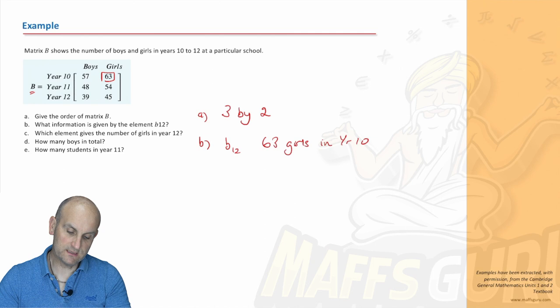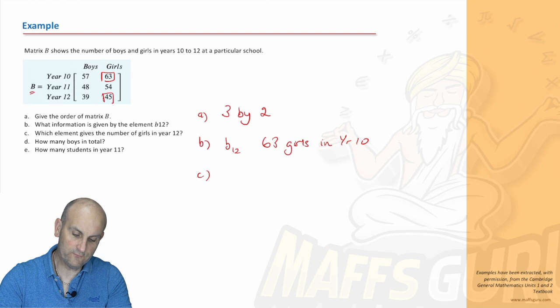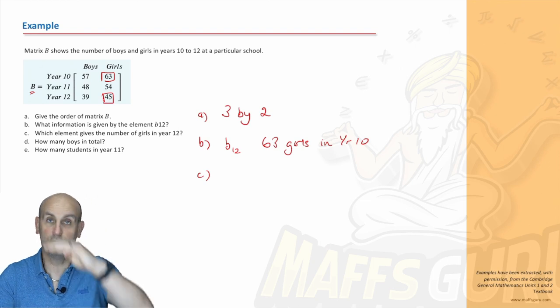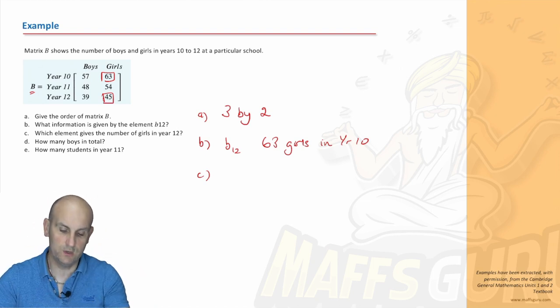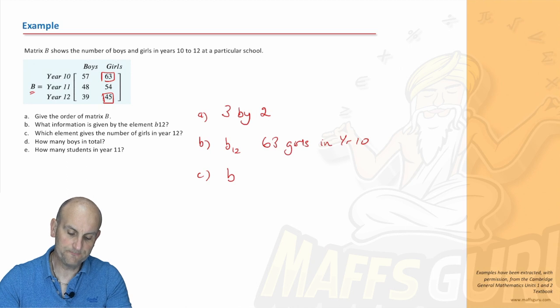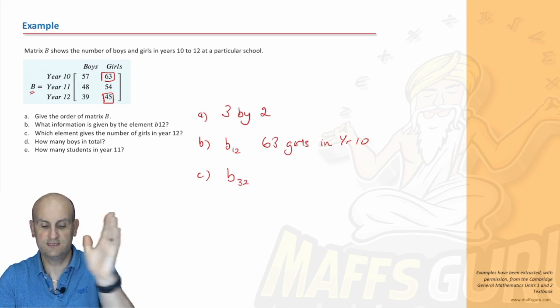Which element gives the number of girls in year 12? So, I want girls in year 12. That's that number there, 45. So, it's row one, two, three, by two. So, we would be doing B_3,2. Yes, because it's the third row, second column. Wow!